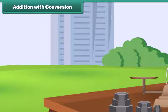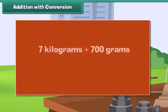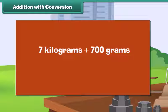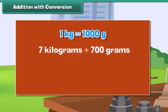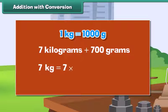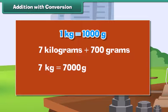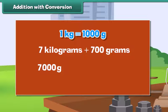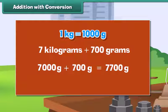Addition with conversion: Let us add 7 kilograms with 700 grams. First, convert kilograms into grams: 1 kg equals 1000 grams, so 7 kg equals 7 into 1000 grams, which is 7000 grams. Therefore, 7 kg plus 700 grams equals 7000 grams plus 700 grams, which equals 7700 grams.